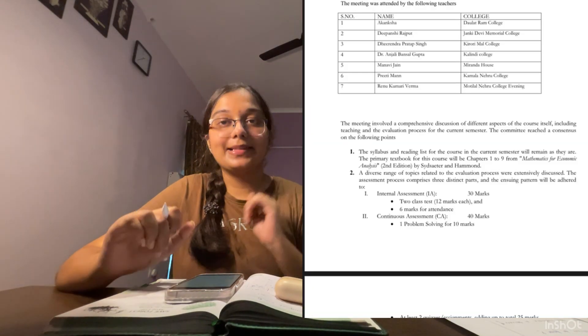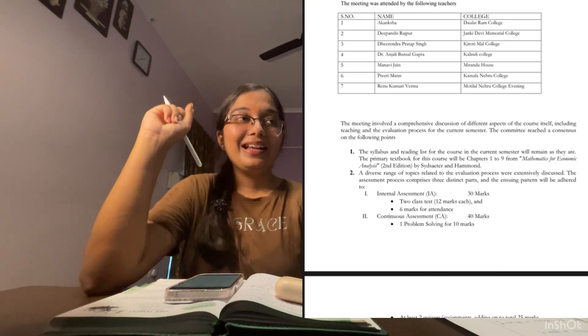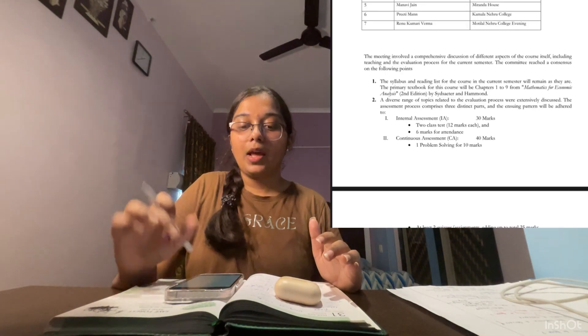Now coming to the exact examination pattern. Taking Mathematical Method for Economics as an example, you can see on screen that there are two components: your external examination is going to be 90 marks, and your internal examination is going to be 70 marks. The external is simple — at the end of the semester you appear for the paper worth 90 marks. I'll also be sharing previous year question papers in future videos.